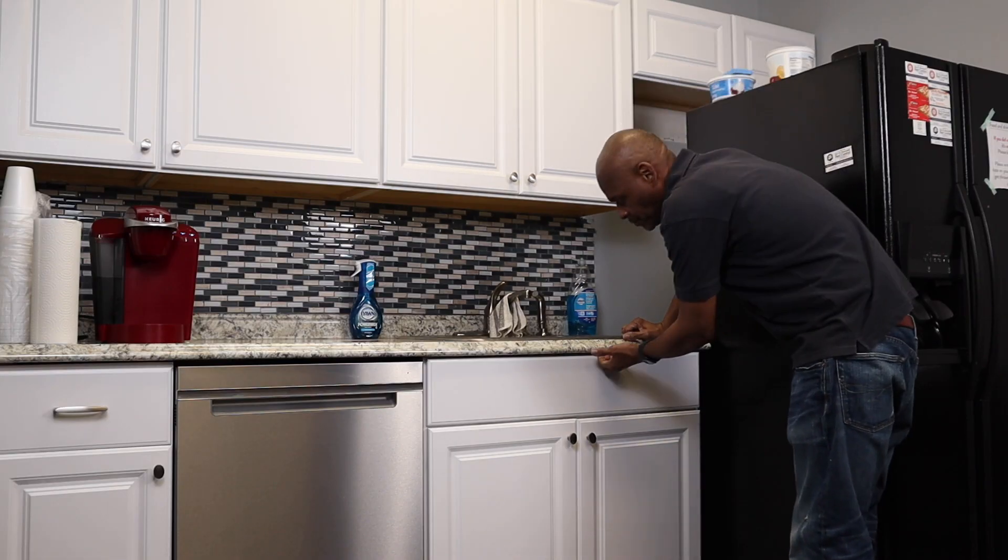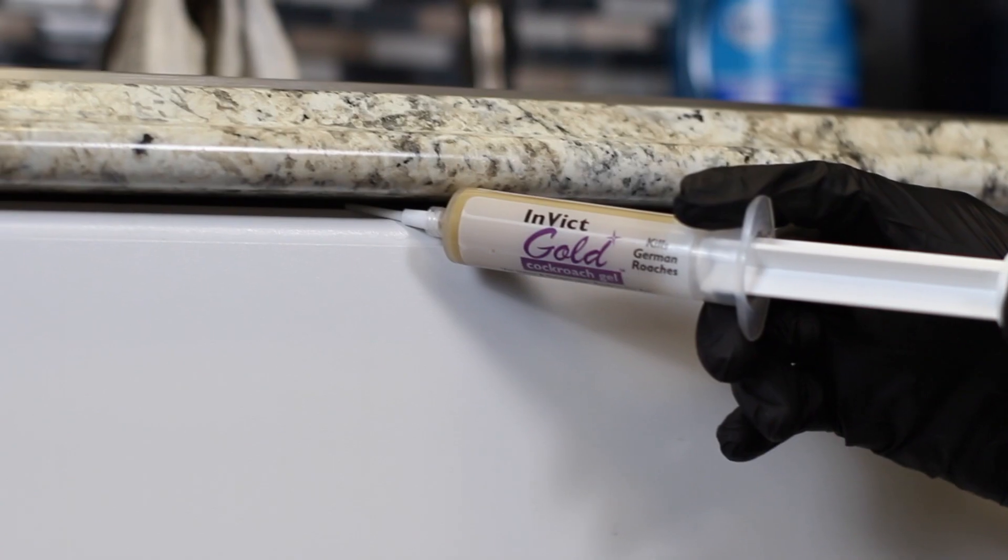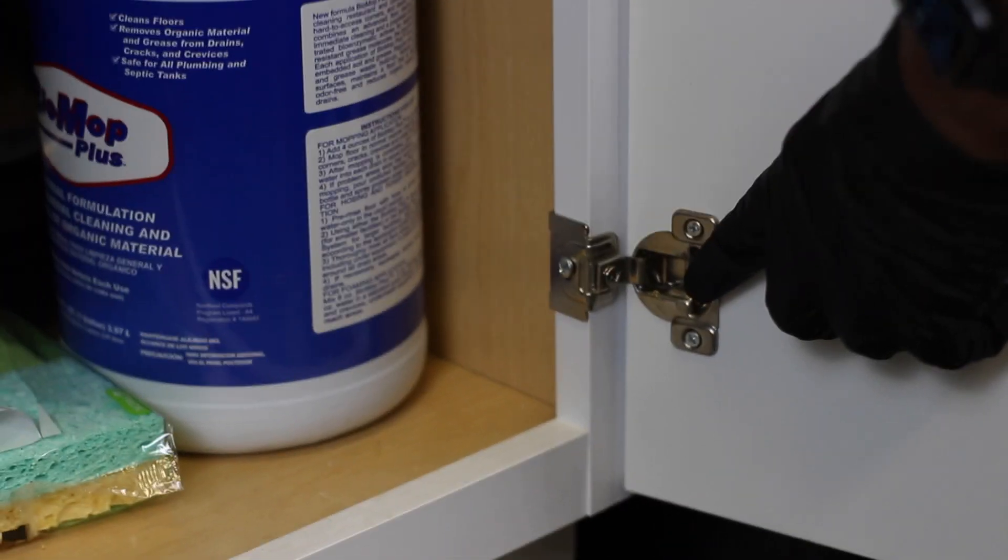Another spot is under your countertop. Under the countertop it's real dark, it's got a lot of little cracks. And another place is in the cabinets on your door hinges. They like to be on the door hinges and you can put bait there.